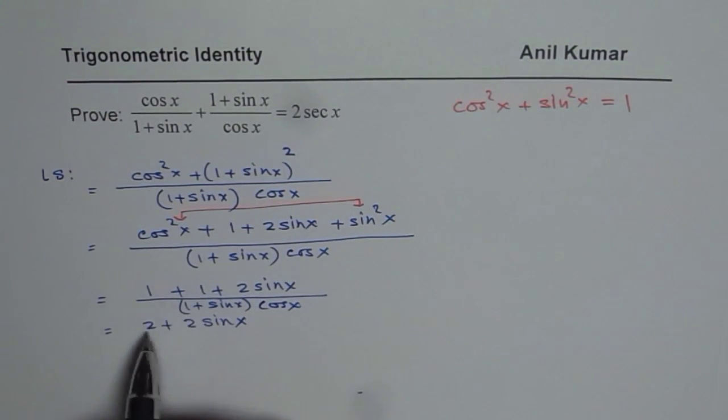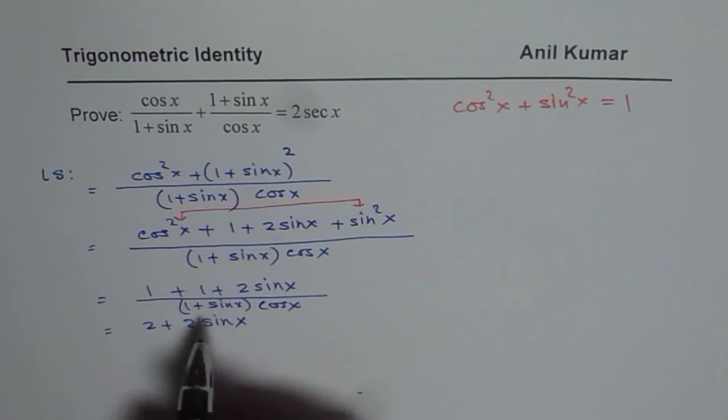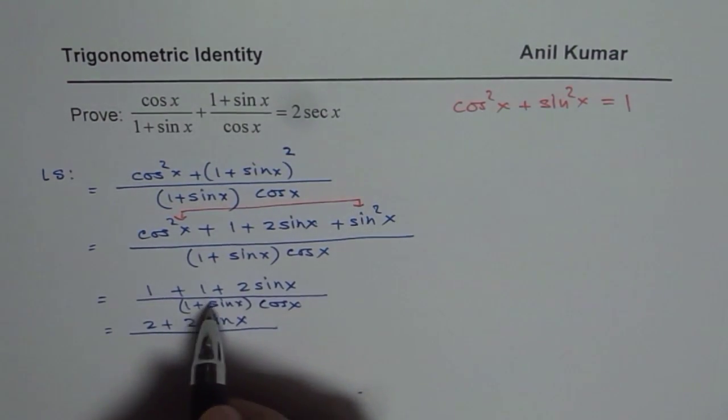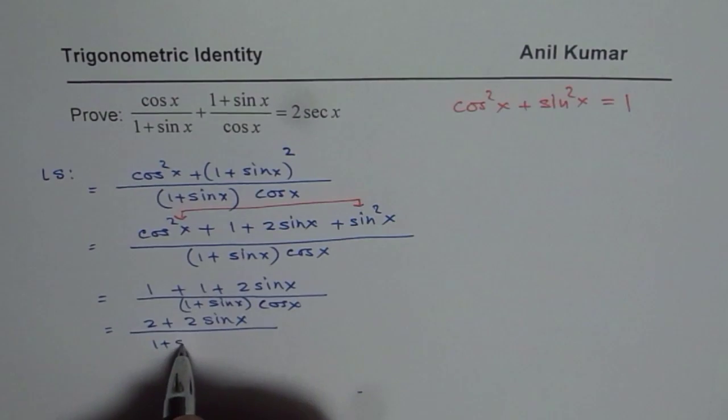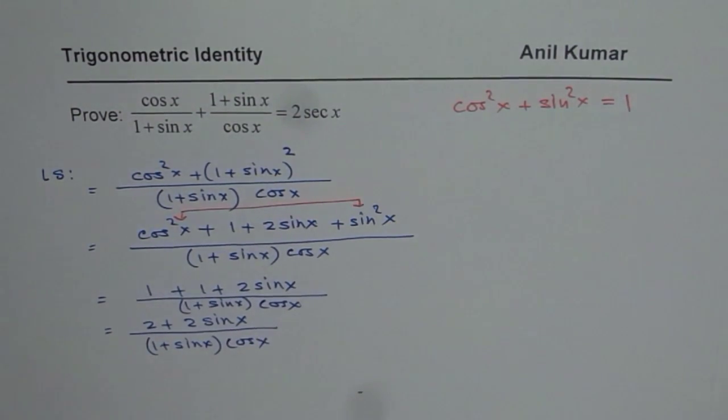We have 2 plus 2 sin x in the numerator divided by 1 plus sin x times cos x. Let us take it to the right side and solve it further.